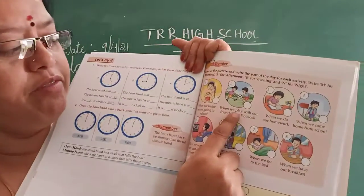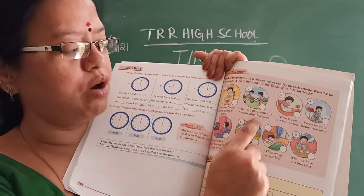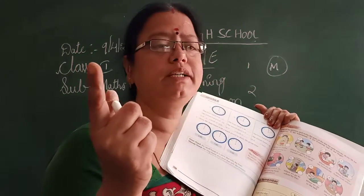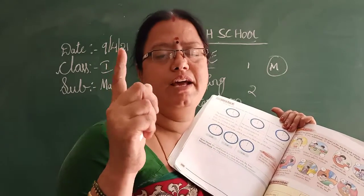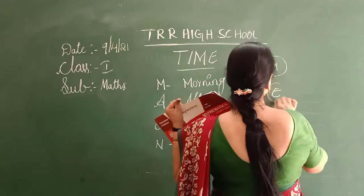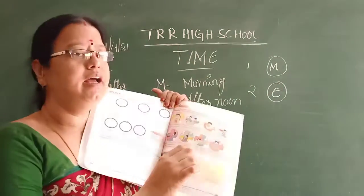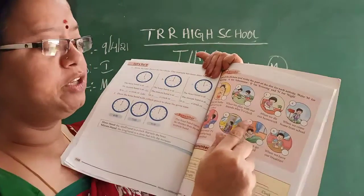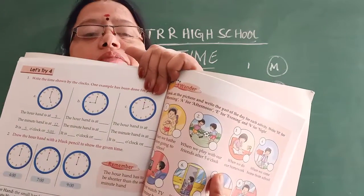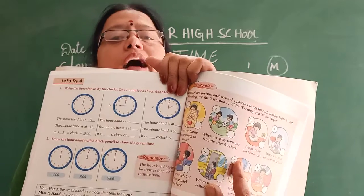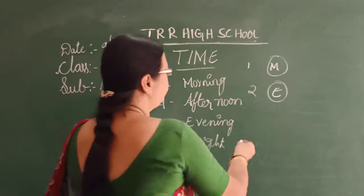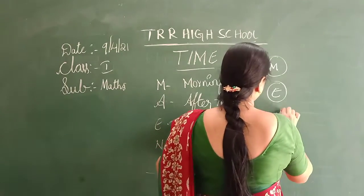In the second picture, when we play with our friends after five o'clock — is it afternoon or evening? Yes, it is evening, so write E in the circle. In the third picture, the boy is doing homework, and in front of him there is a lamp, so we write N for night in the third circle.